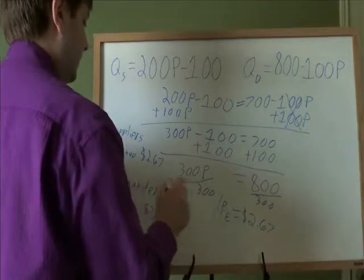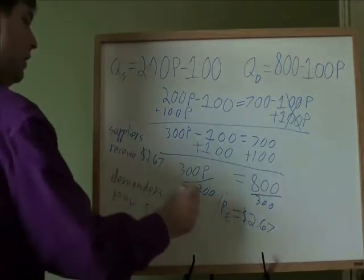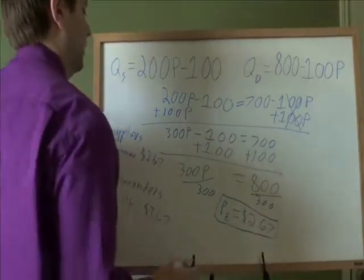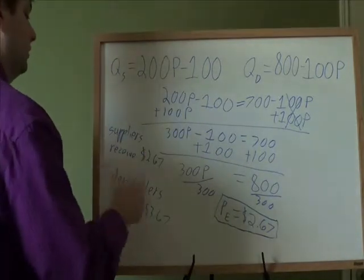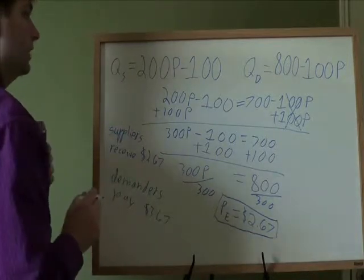So we've got the same amounts there. Our pe was not the exact same, but that's only because we used it differently. Here pe is what the suppliers received. On the last problem, pe was what the demanders paid. But we still get the same number of answers there when we write out what it actually means.